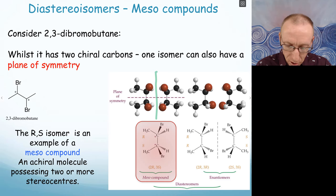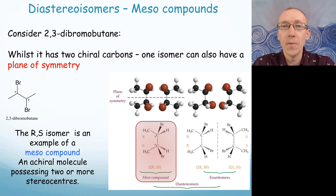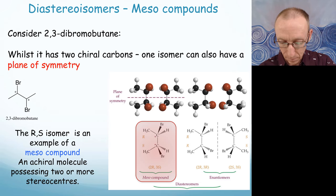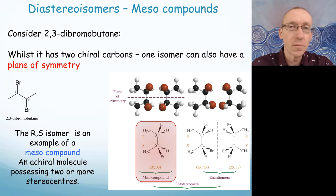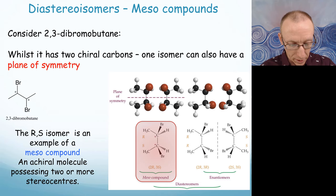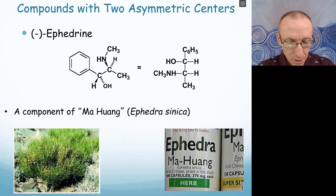If we draw the mirror image of this compound and make a model, we can actually twist it so that it superimposes on the original molecule — so it's not a chiral molecule. You can also think of this in terms of the fact that both stereogenic centers have the same substituents attached to them, so if you spin the molecule around, the 2 position could also be the 3 position due to the molecule's symmetry. We call this a meso compound: an achiral molecule possessing two or more stereogenic centers that has a plane of symmetry within it.